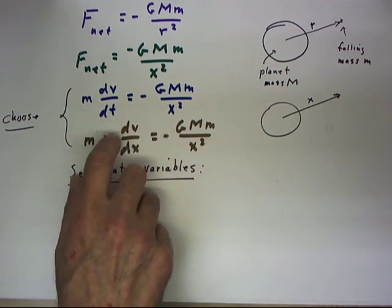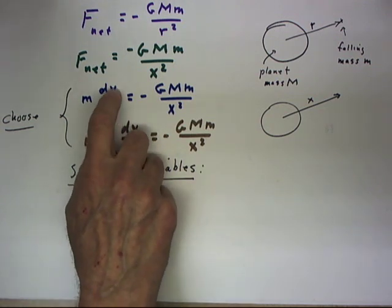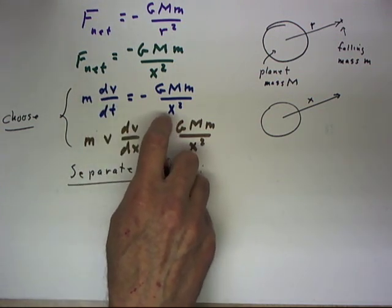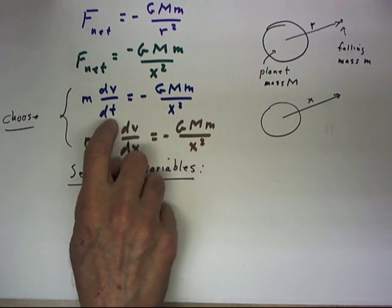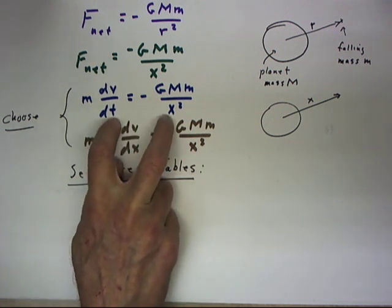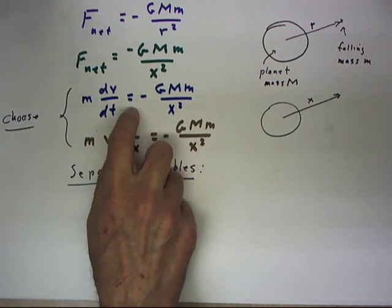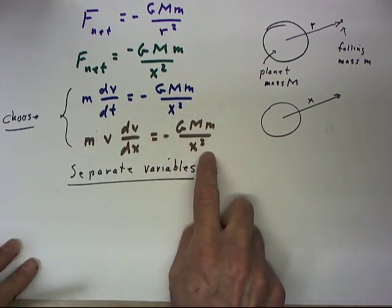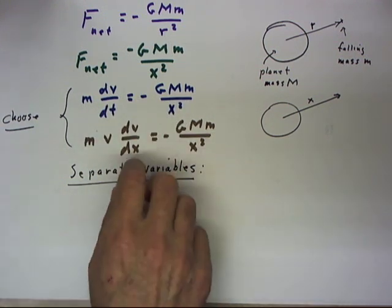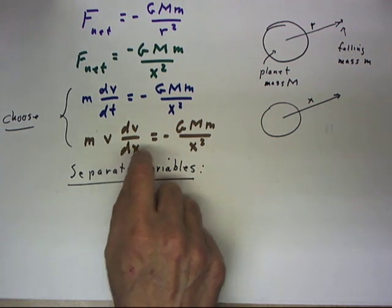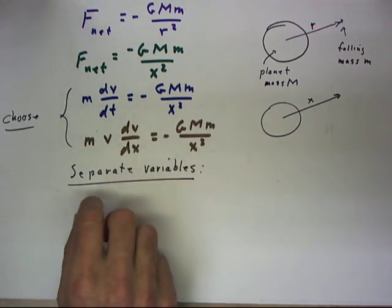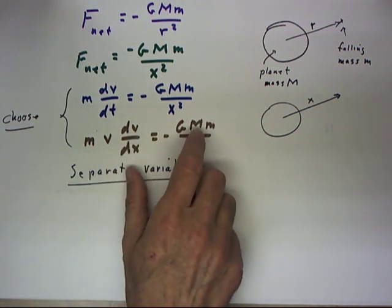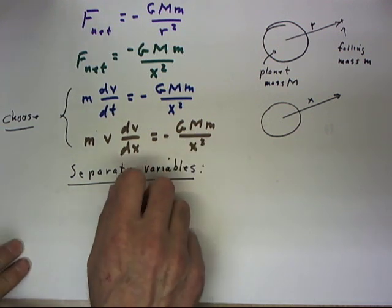So we're going to have three variables here: V, T, and X, with no specific relationship between T and X. So that's not going to be a good choice. We're going to choose this one where our dependent variable is X and our function is given in terms of X. And we can easily see that we're going to be able to separate the variables.